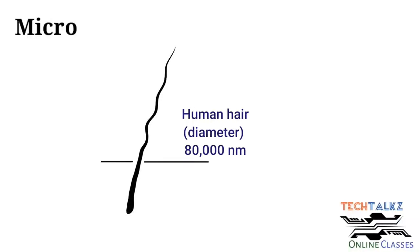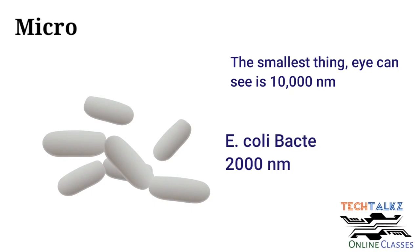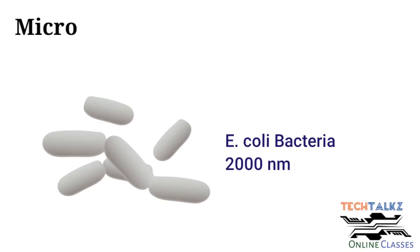Now we can take examples for microscale. Approximate size of human hair is 80,000 nanometer. The smallest thing our eye can detect or see is only 10,000 nanometer. The size of E. coli bacteria will be in the range of 2 micrometers, which is equal to 2,000 nanometer.